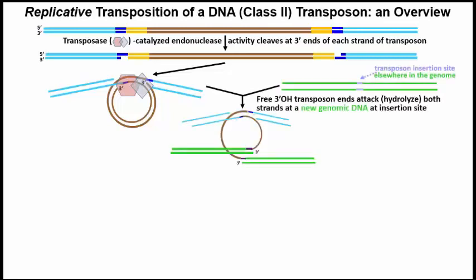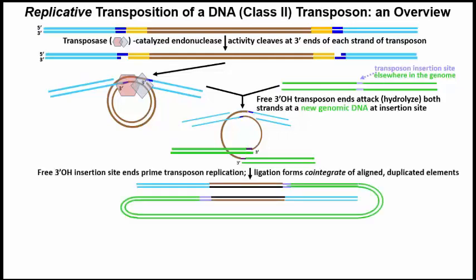In the next step, the transposase enables two free 3' hydroxyl ends of the transposon to attack or hydrolyze the double-stranded target site, and then ligate each cut end of the transposon strand to the different cut ends of the target DNA strands. The result of ligation leaves the original transposon in place, as part of a structure called the cointegrate. In the cointegrate, the original and replicated transposons are aligned by folding of the genomic DNA.